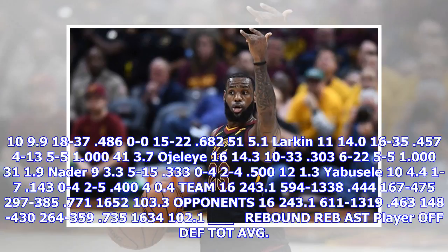Celtics team totals for the postseason: 16 games played, 243.1 minutes, 1594 field goals made out of 1338 attempted, .444 percentage, with 167-475 on three-pointers, 297-385 from the free throw line at .771, totaling 1650 points.